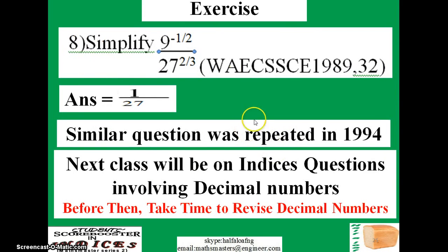I'm giving you an exercise — it's from 1989, question 32. Try to work on it; if you do, you'll get the answer shown. A similar question was also repeated in 1994. Our next class will be on indices involving decimal numbers. Before then, I advise you to revise decimal numbers. With this, I'll stop here, and until our next meeting — study very well, and I wish you the best of luck. See you then.